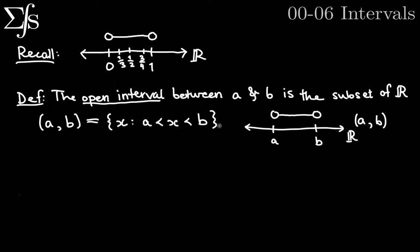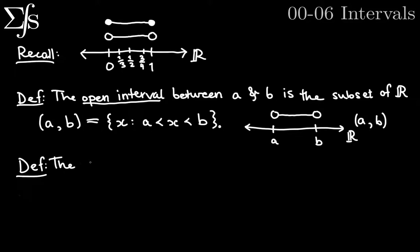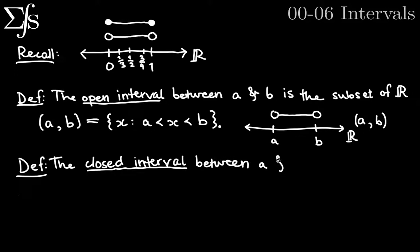But what happens if I want to include the endpoints? Say I wanted to include 0 and 1. I normally would draw that with filled-in circles — a closed circle at 0 and another closed circle at 1. Some people use brackets to denote that, which will again make sense with the notation. I prefer the filled-in circles. So I'm going to define that right here: the closed interval between A and B is the subset of R, denoted bracket A comma B end bracket.